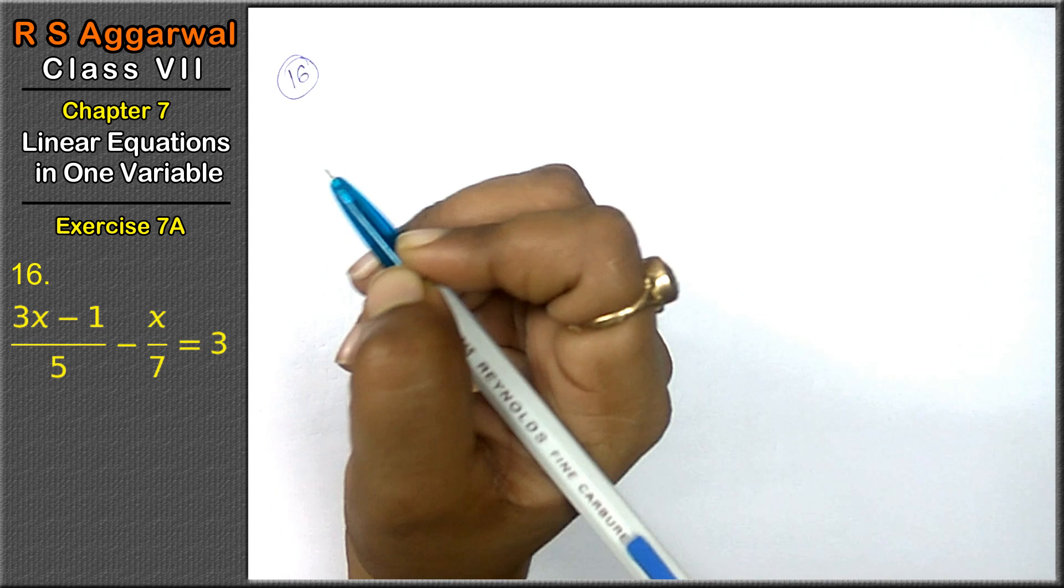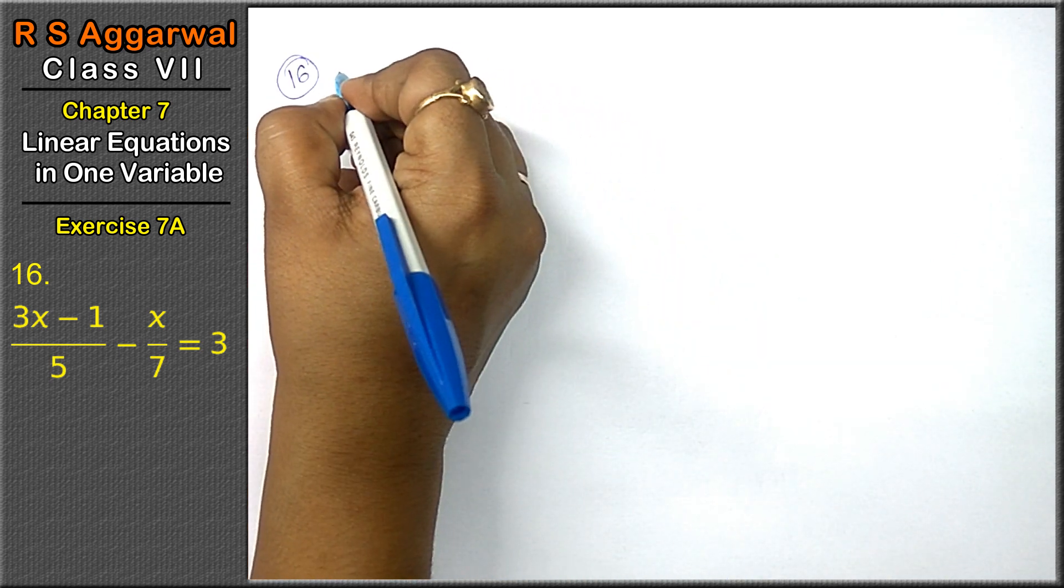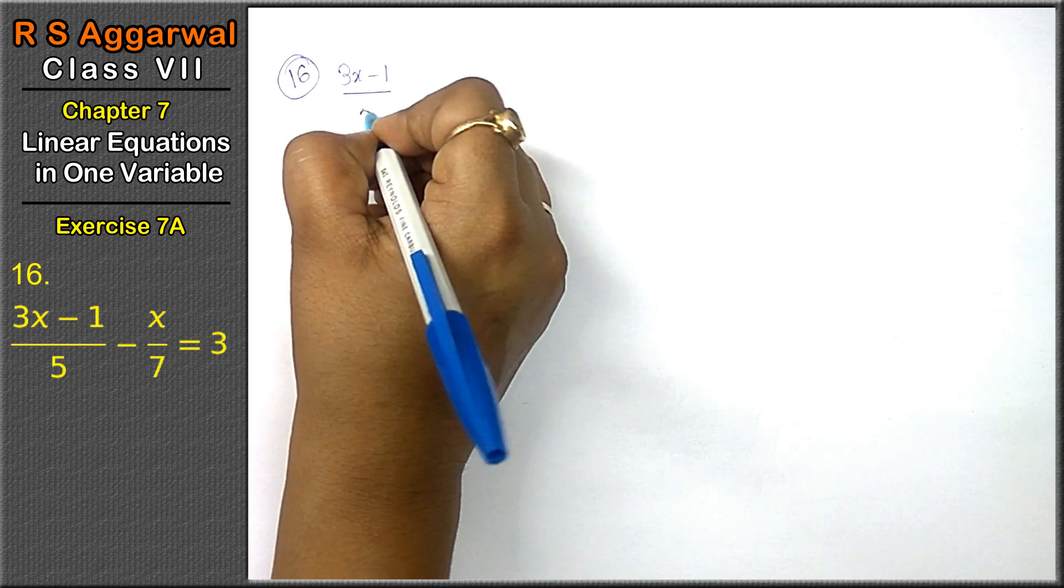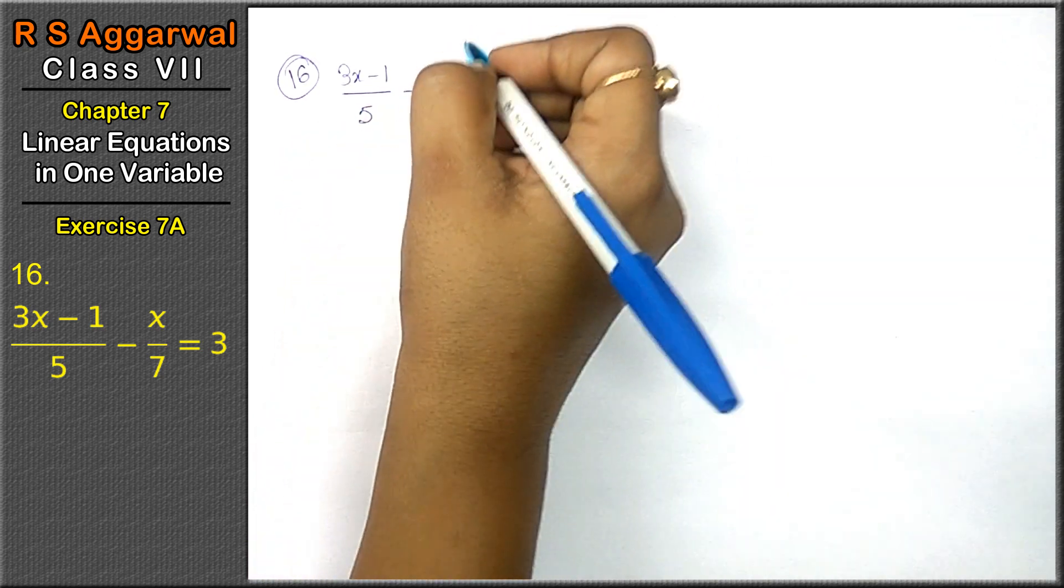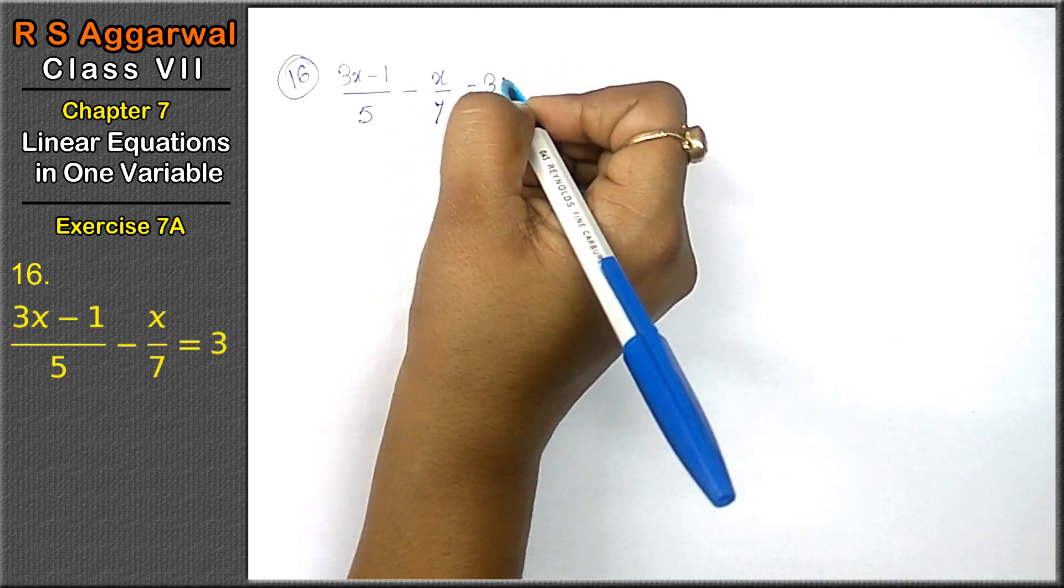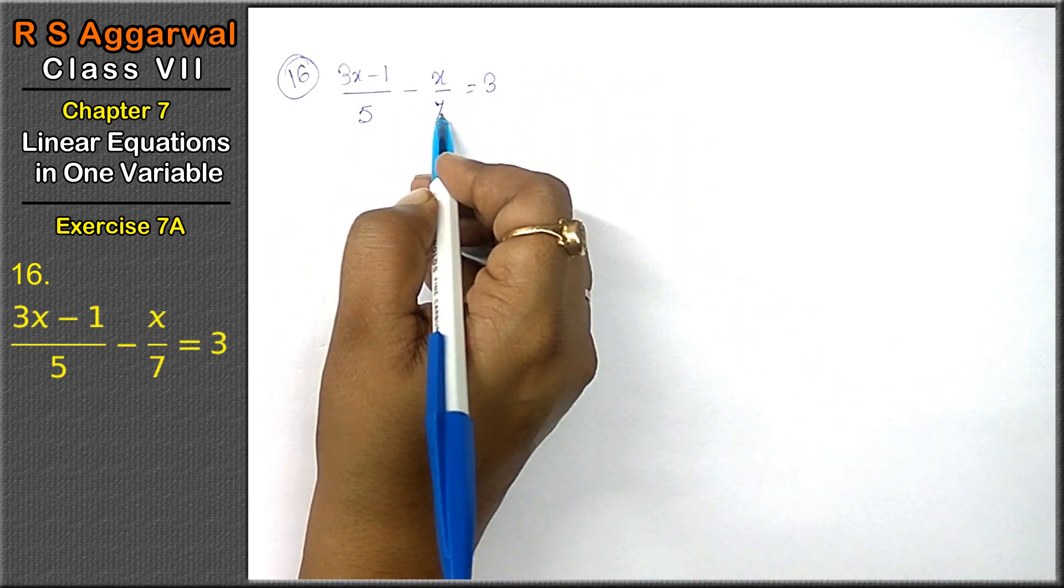Question number 16 is 3x minus 1 upon 5 minus x upon 7 equals 3. Friends, these are two x terms.